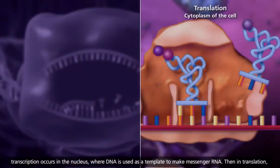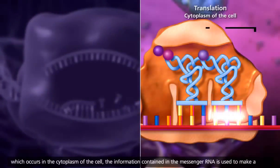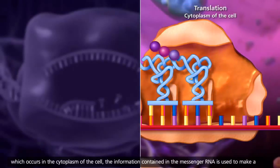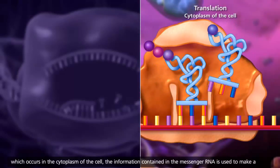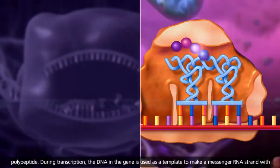Then in translation, which occurs in the cytoplasm of the cell, the information contained in the messenger RNA is used to make a polypeptide.